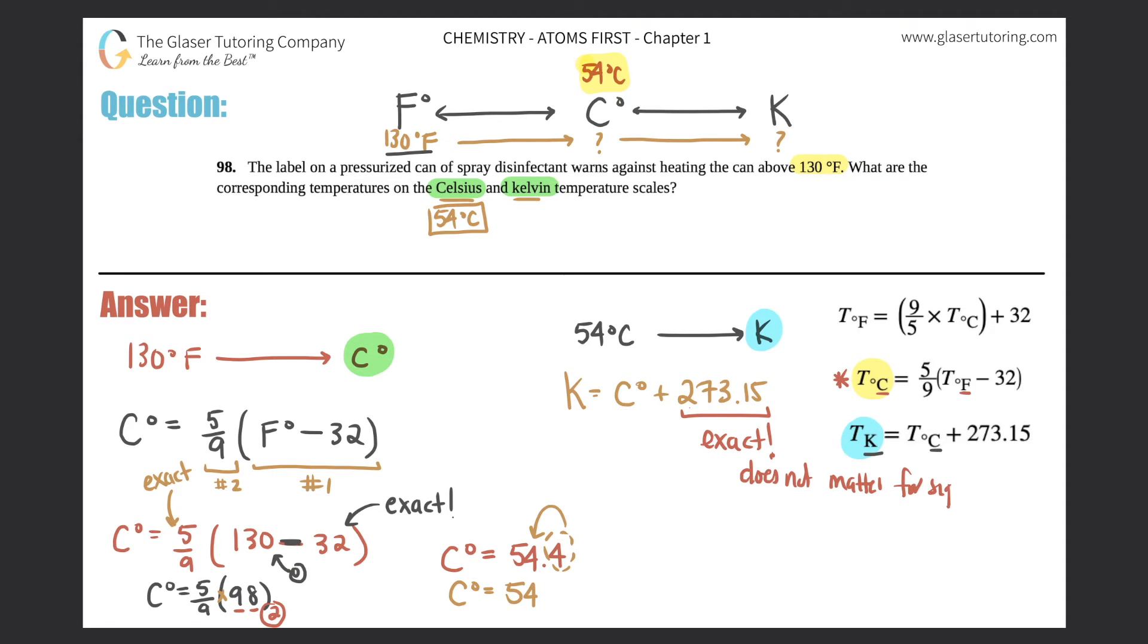Kelvin = 54 + 273.15. We're adding, so the rule is least number of sig figs after the decimal. If I look at 54, there are zero sig figs after the decimal, so I should not see anything after the decimal.